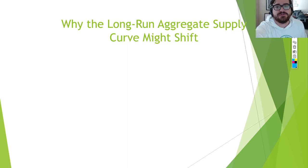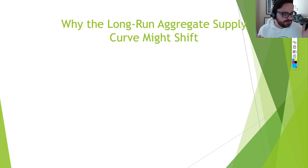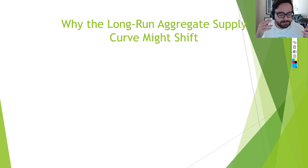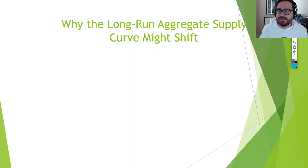So here's what you need to be able to do on AP exam questions. Typically the first part of an FRQ related to aggregate demand and supply will give you context — like 'South Africa is currently in a recession' — and then ask you to draw an AD-AS graph with AD, SRAS, and LRAS all labeled, and show what happens when there's an increase in government spending.